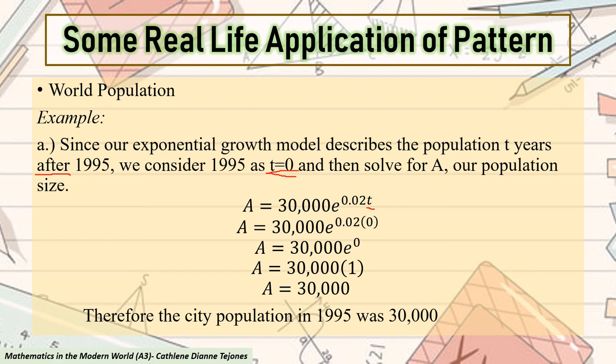Next, let us find the value of e^0. As we all know, any variable or any value raised to 0 is equal to 1. Therefore, we can say that A = 30,000 × 1, and 30,000 × 1 is equal to 30,000. Therefore, the city population in 1995 was 30,000.